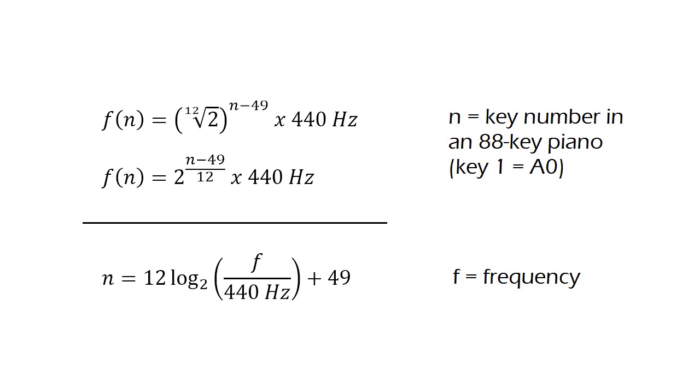In the third formula, which is simply any of the first two solved for N, we replace F with the note's frequency. And when solved, we get the approximate key number.